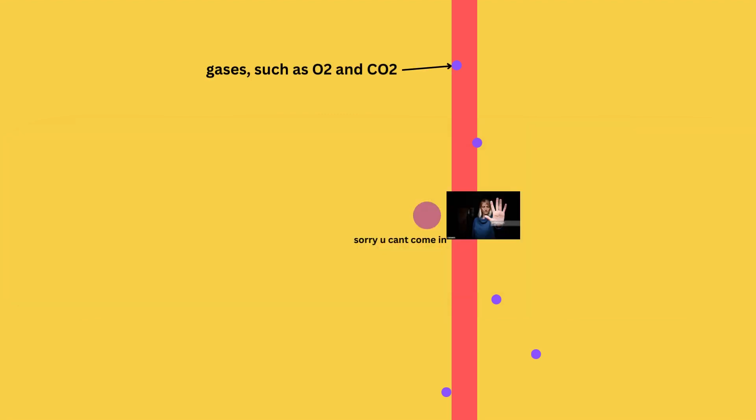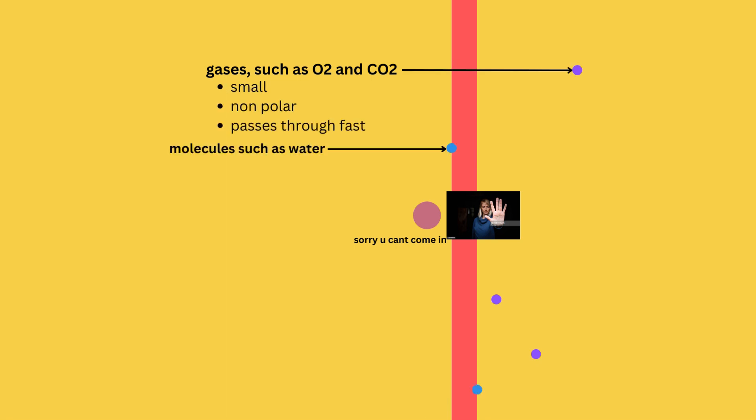The molecules that are going to be able to freely pass the cell membrane without any assistance are going to be gases such as O2 and CO2. These molecules are able to pass through fast because they are small and non-polar. However, when a molecule is small but also polar, such as water, it is going to pass through in small amounts and more slowly compared to small and non-polar molecules.